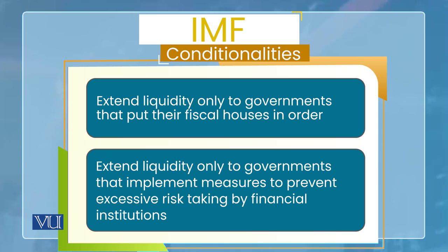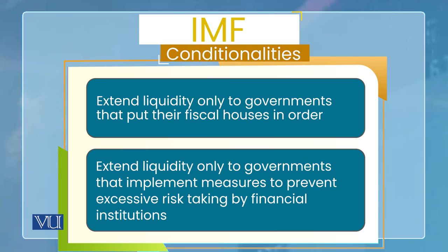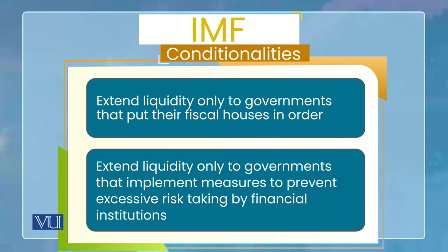When the IMF imposes conditionalities, it requires the government receiving the loan to maintain fiscal discipline — that is, to reduce the fiscal deficit. If the government is running a very high fiscal deficit, the IMF includes in its conditionalities that the loan is being given, but the country must reduce its fiscal deficit and maintain fiscal discipline. Similarly, IMF conditionalities may also require governments to curb policies that encourage excessive risk in lending, thereby addressing the moral hazard problem.